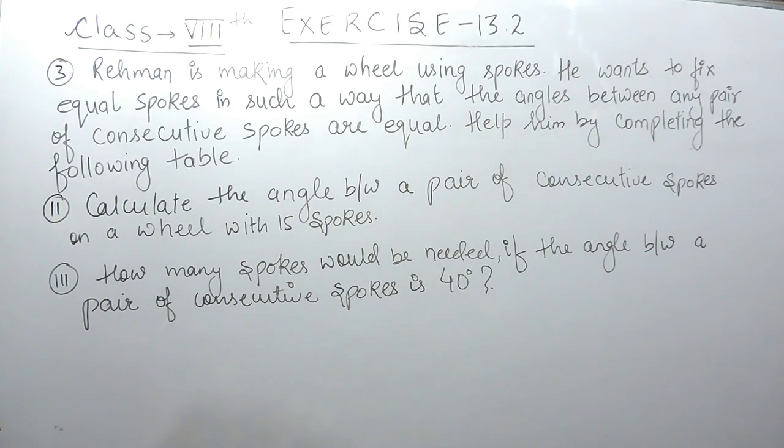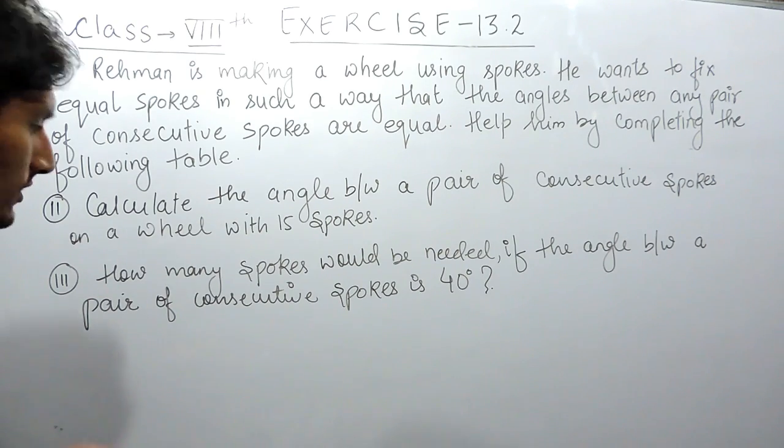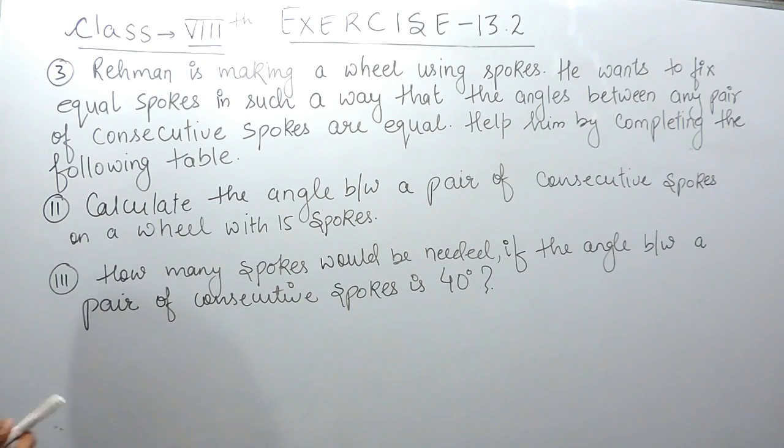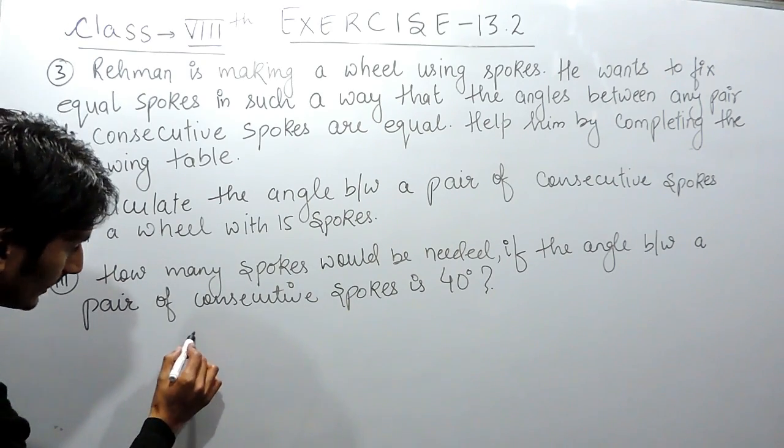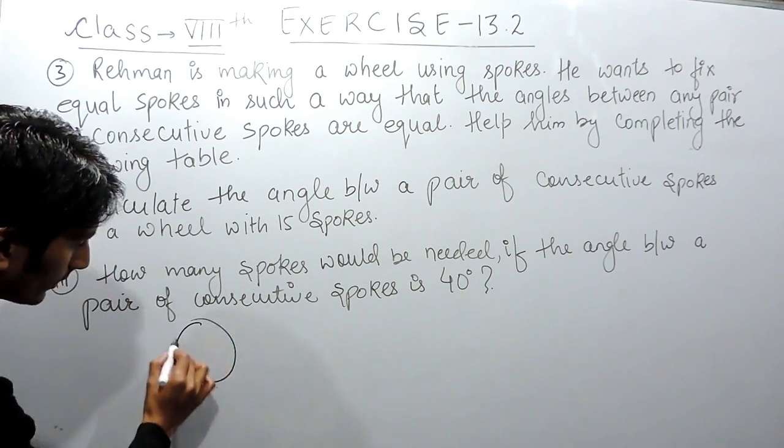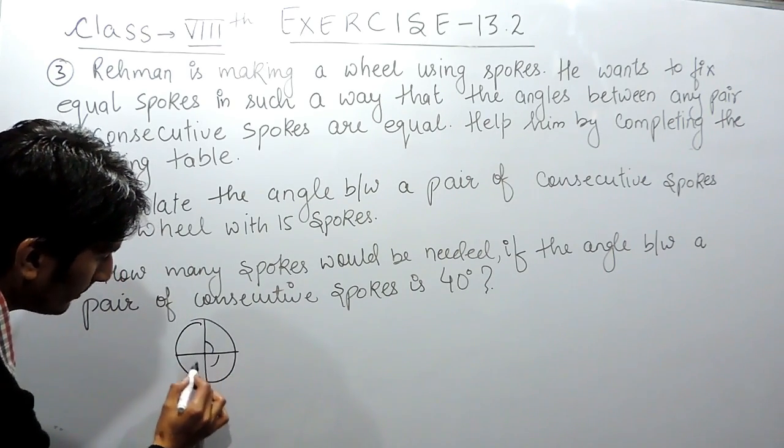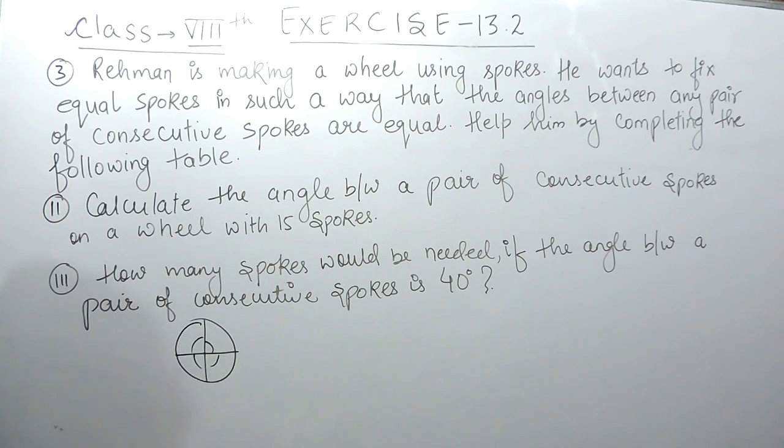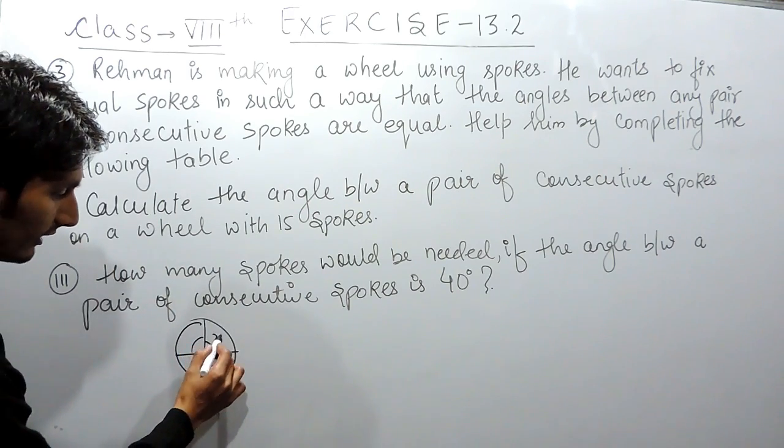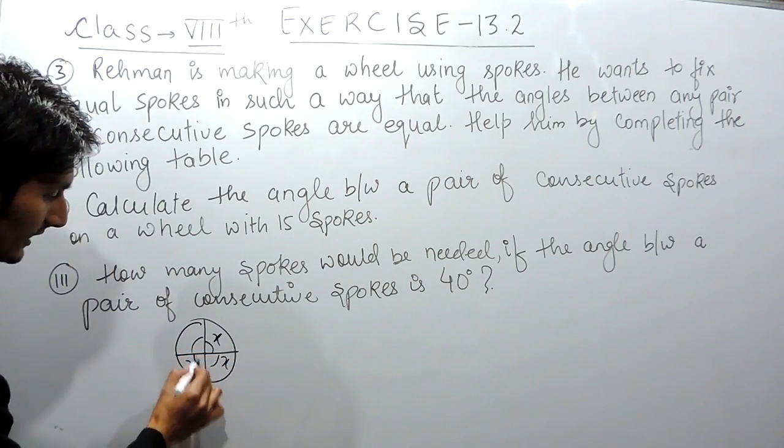Probably I've already discussed in the previous video that if the number of spokes are 4, obviously there will be 4 angles between these spokes, and all angles will be equal. It is given to you in the question. So if these angles are considered as X, clearly there will be 4 angles, each of X degrees value.